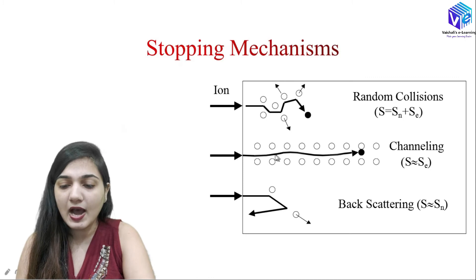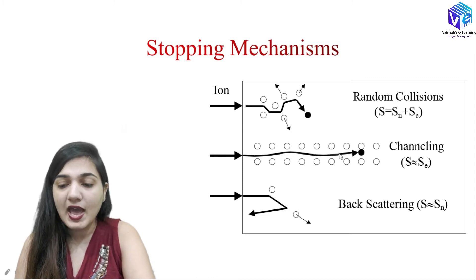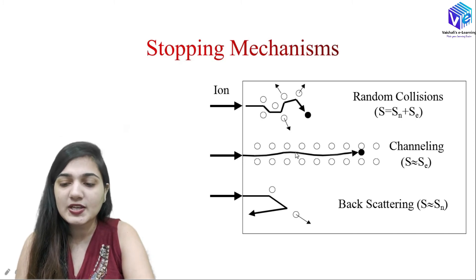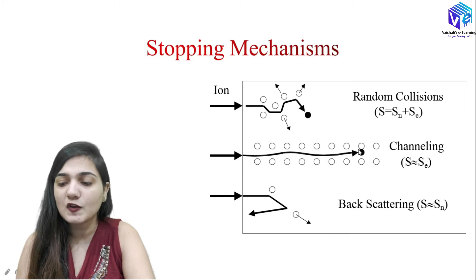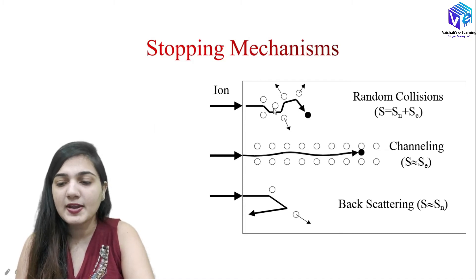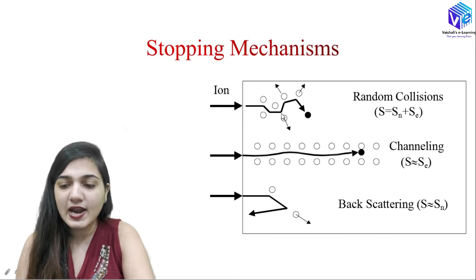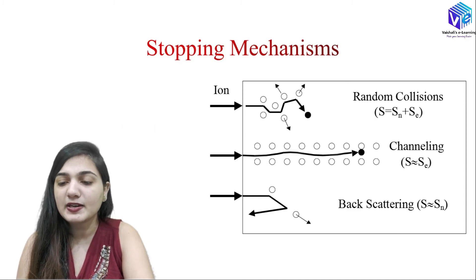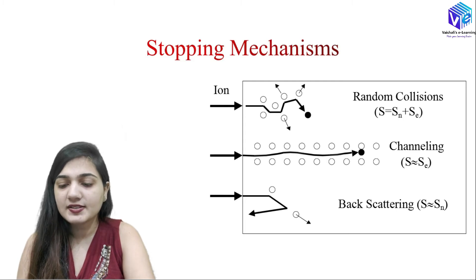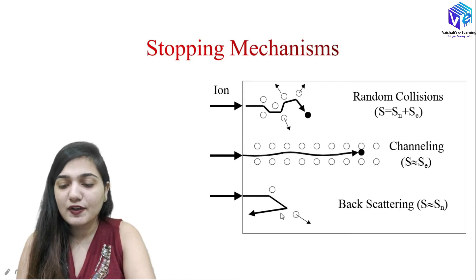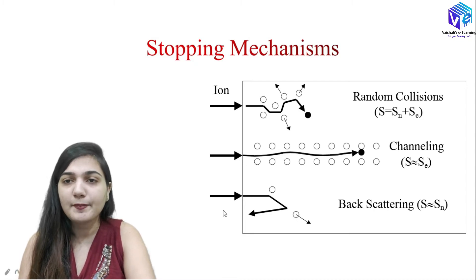In the case of electronic stopping, the ions will go deep inside the wafer without encountering any nucleus, with no significant scattering and no significant change in the actual path, causing the ions to go very deep inside the wafer surface — this process is called channeling, which will be discussed in detail in the next video. If both nuclear and electronic stopping are present, there will be more scattering, no in-depth penetration, and the dopant atoms stop near the surface. There is also a possibility of backscattering, where ions reverse direction entirely.